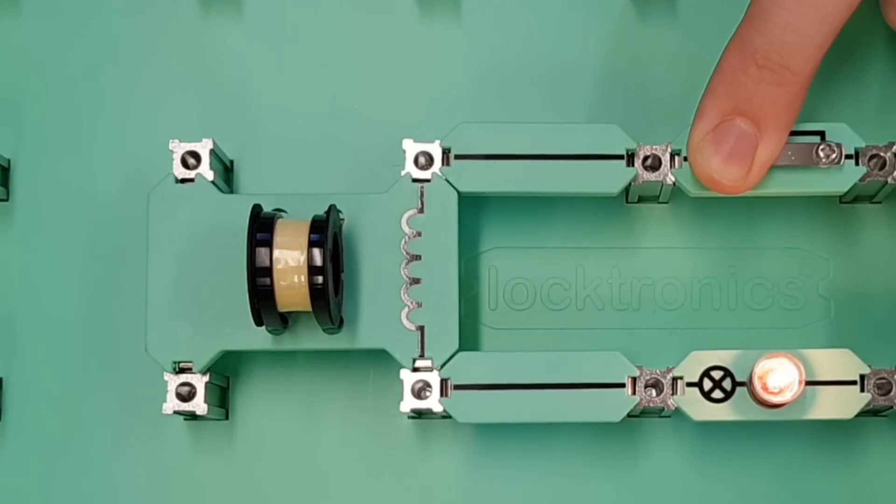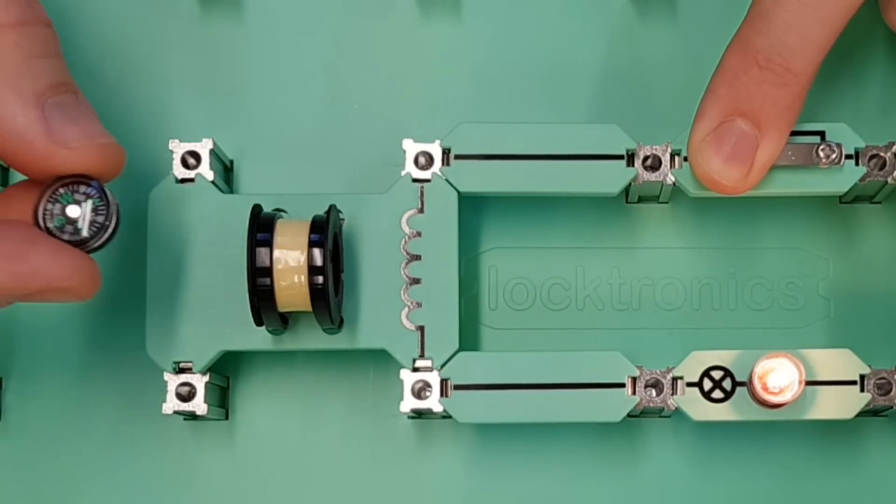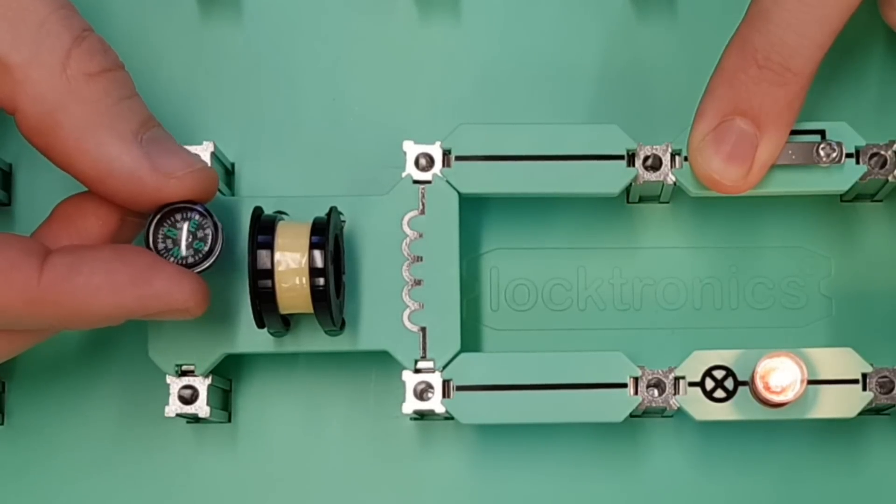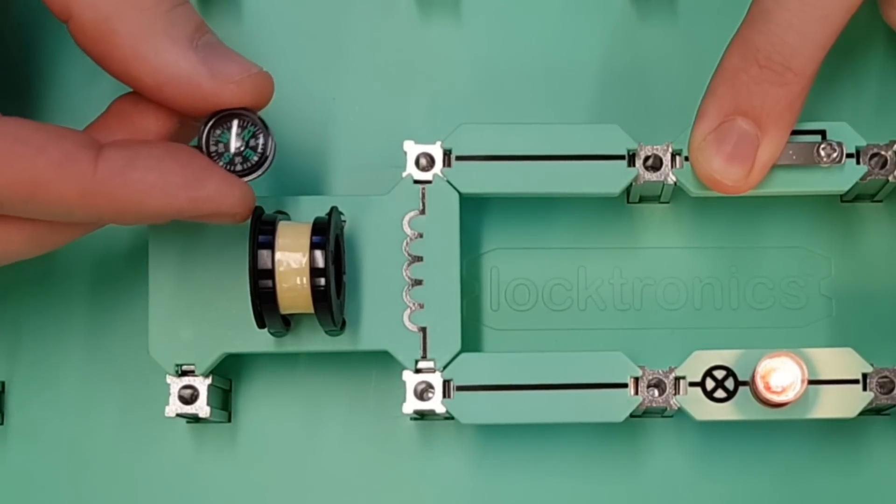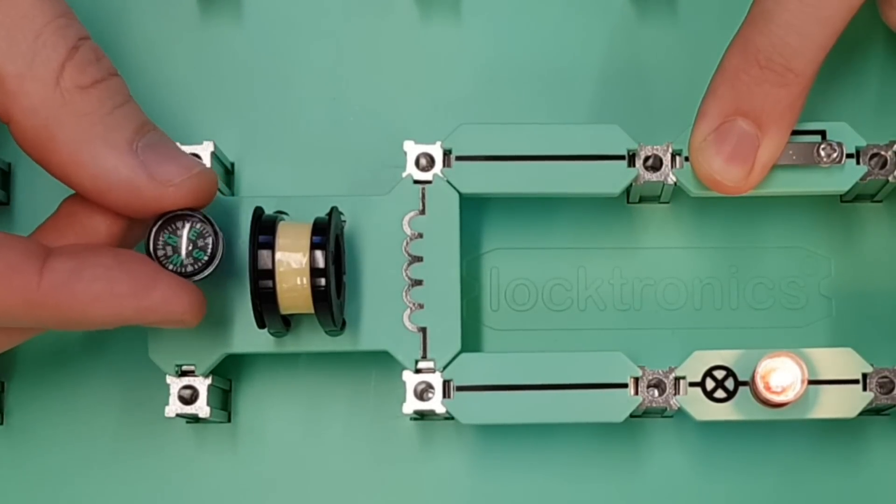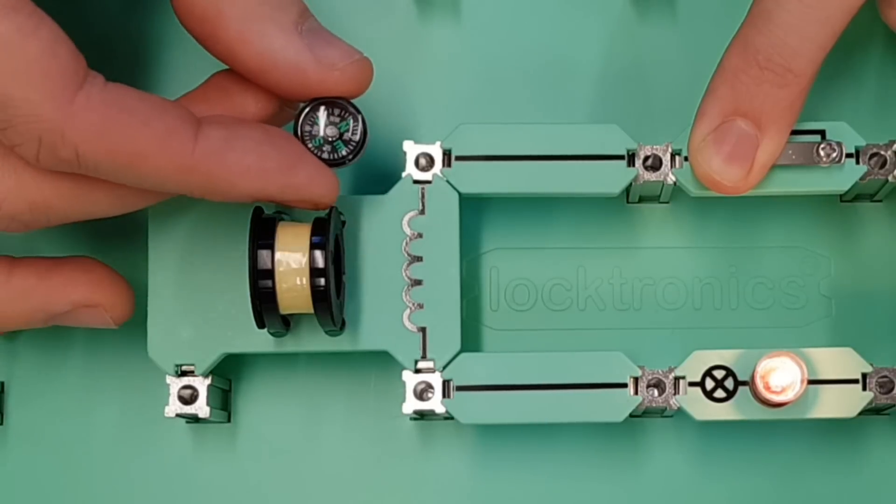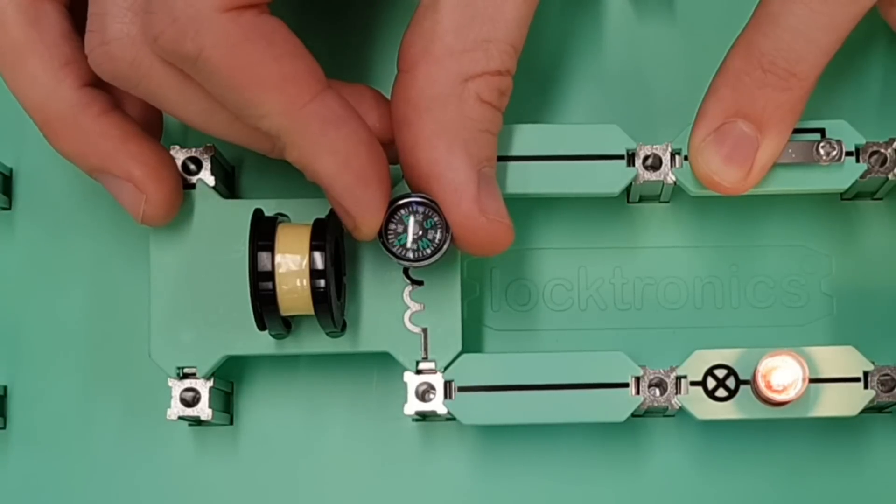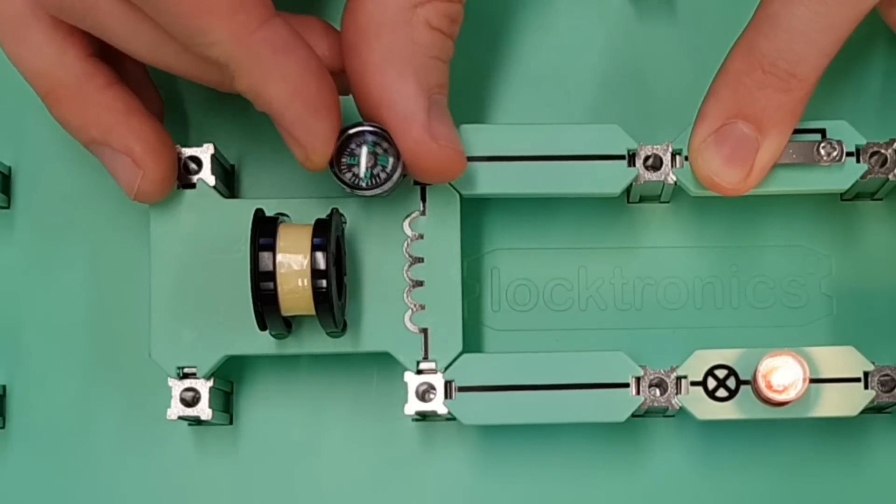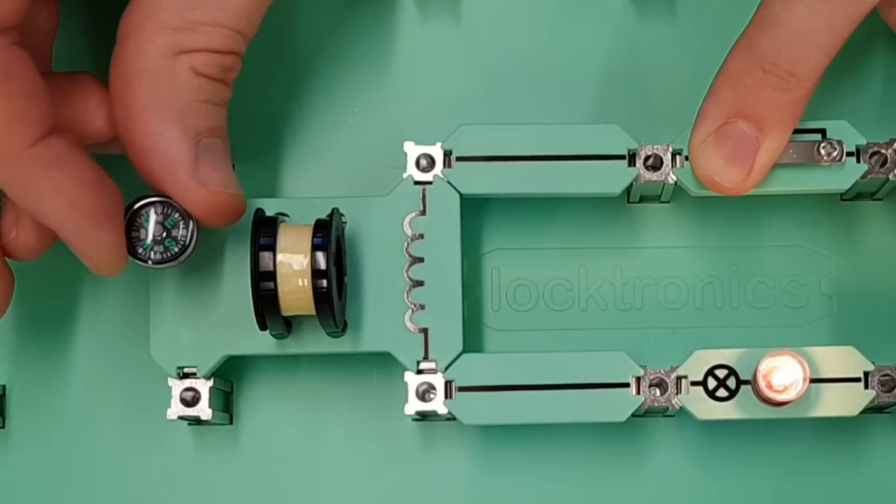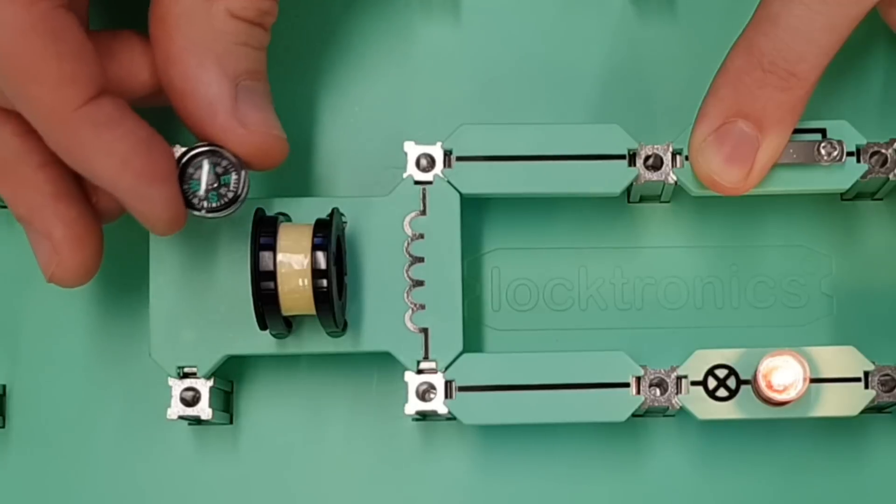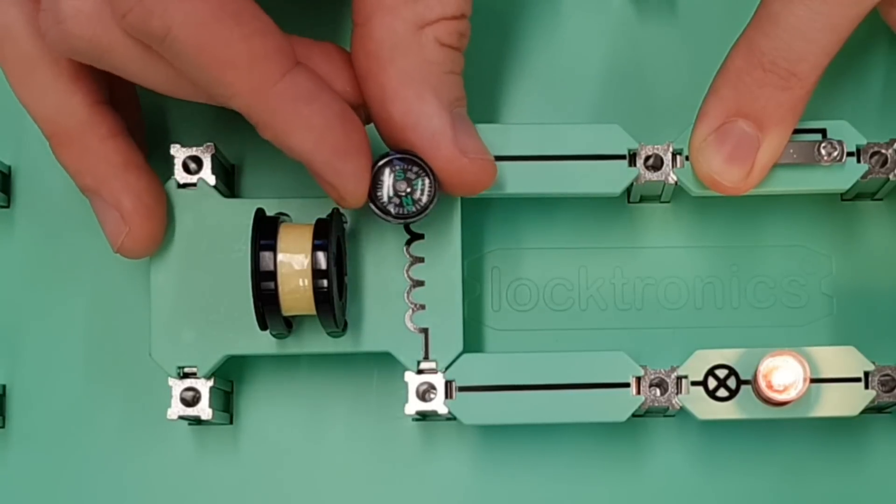However, if we start to bring our compass very close to this inductor, you can start to see that the compass will behave in a very similar way to how it did when we were looking at the bar magnet. So you can see there that it's now starting to snap around and it's pointing away from true north and it's pointing towards the magnetic field. So we can use the compass to help us visualize the magnetic field that is surrounding that inductor.